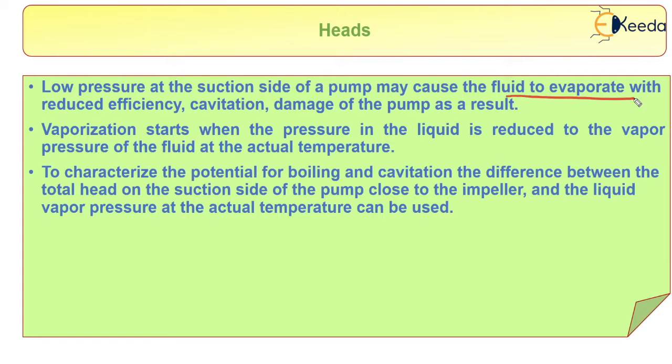Vaporization starts when the pressure in the liquid is reduced to the vapor pressure of the fluid at actual temperature. To characterize the potential for boiling and cavitation, the difference between the total head on the suction side of the pump close to the impeller and the liquid vapor pressure at the actual temperature can be used.